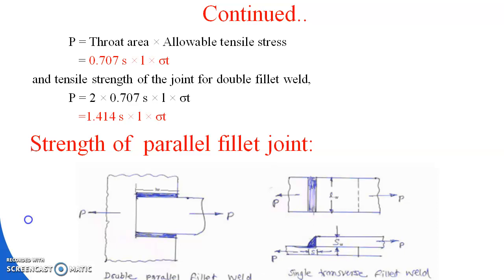Next is the strength of the parallel fillet joint. The fillet joint is of three types: single transverse, double transverse, and parallel fillet joint. We have already studied the single transverse and double transverse joint formulas. Now here is the strength of the parallel fillet joint.